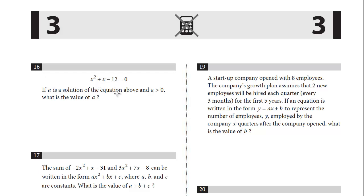Let's take a look at 16. We have this equation, A is a solution to the equation above, and A is positive. What is A? This is just a straightforward factoring question. We want to factor this, and so we have X and X. We want two factors of negative 12 to get positive 1, and we know 4 and 3, so we could have X plus 4 and X minus 3.